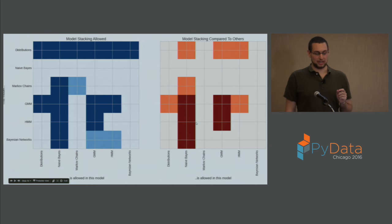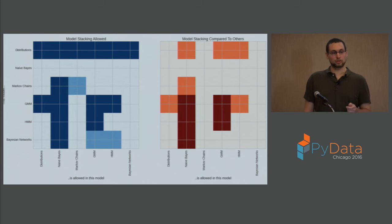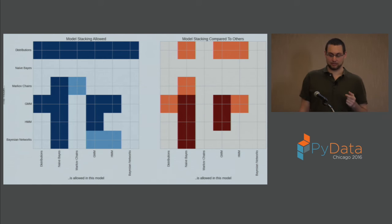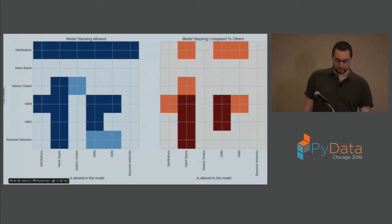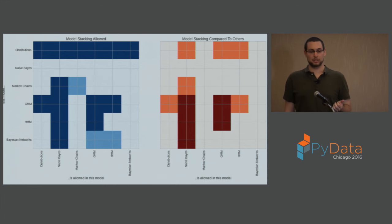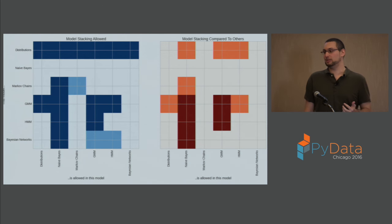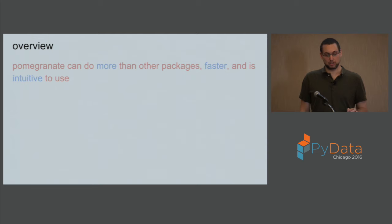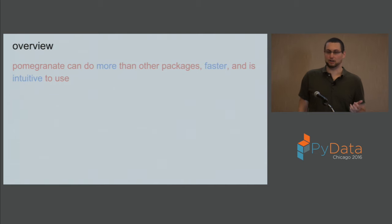Compared to other packages, orange squares show packages that implement similar features but not to the same extent; red squares show model stackings that, to my knowledge, no other Python package allows. For example, HMMLearn supports Gaussian mixture model HMMs, but in Pomegranate you can use general mixture models of arbitrary distributions — they don't have to be multivariate Gaussians. If you leave this talk knowing nothing else: Pomegranate can do more than other packages, it can do it faster, and it's intuitive to use.